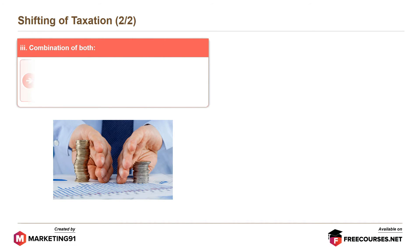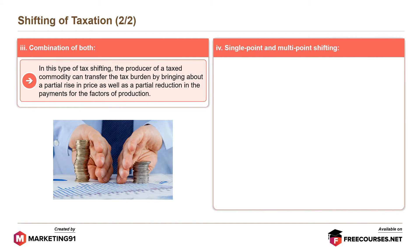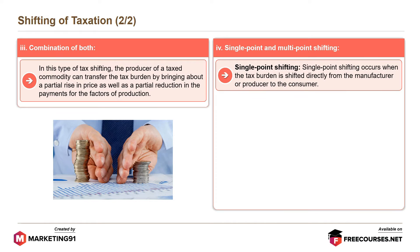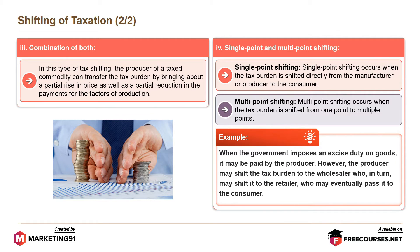Next is combination of both. In this type of tax shifting, the producer of a taxed commodity can transfer the tax burden by bringing about a partial rise in price as well as a partial reduction in the payments for the factors of production. Single point shifting occurs when the tax burden is shifted directly from the manufacturer or producer to the consumer. Multi-point shifting occurs when the tax burden is shifted from one point to multiple points. For example, when the government imposes an excise duty on goods, it may be paid by the producer; however, the producer may shift the tax burden to the wholesaler, who in turn may shift it to the retailer, who may eventually pass it to the consumer.